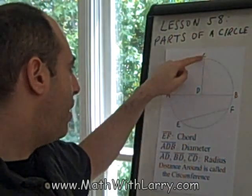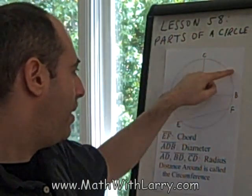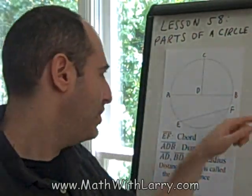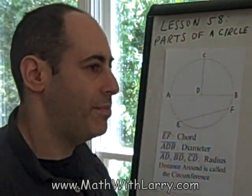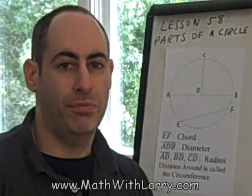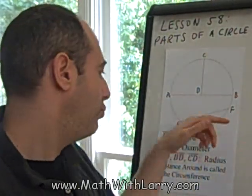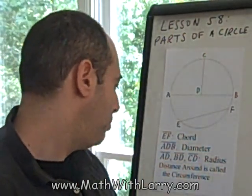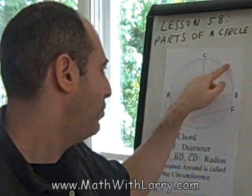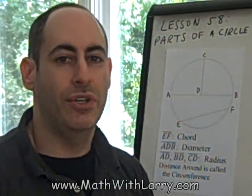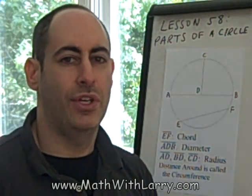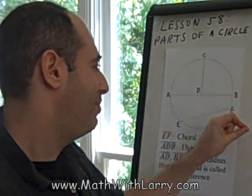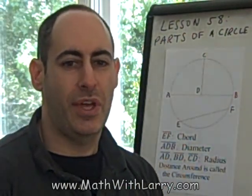We define the distance around the edge of a circle as the circumference. The circumference is simply the distance around. If we were dealing with a shape that wasn't round, we would call the distance around the perimeter. But in the world of circles, we have a special name — we call it the circumference. In later lessons, you'll learn how to actually measure the circumference using a special formula, since we can't just measure straight edges and add them up.